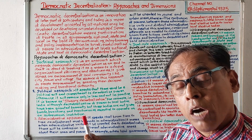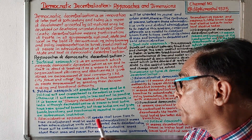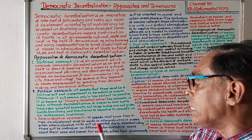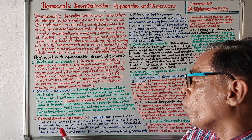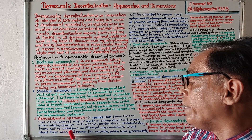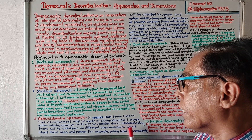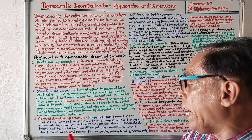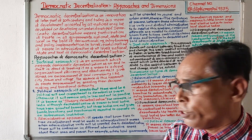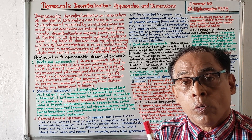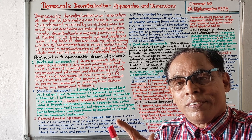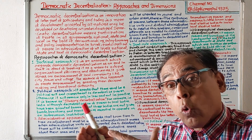Number three: Administrative approach of democratic decentralization. It speaks that from time to time, readjustments must be made in administration. When administrative units are created due to decentralization, there will be confusion in different administrative areas about area of authority and power.